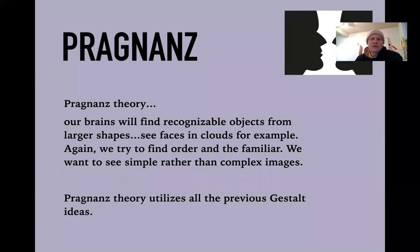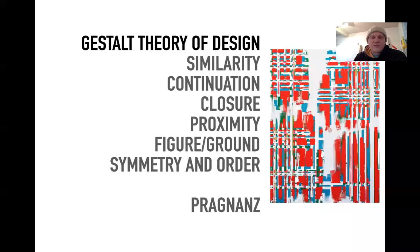If we pull all of these things together, we get something called Prägnanz theory. We will find recognizable objects from larger shapes — we see faces in clouds, for example. We try to find order and the familiar; we want to see simple rather than complex images and shapes. This utilizes all of the previous Gestalt theories. Here they all are: similarity, continuation, closure, proximity, the figure-ground relationship, symmetry and order, with Prägnanz wrapping them all together.